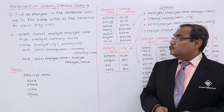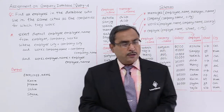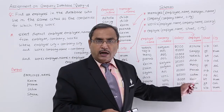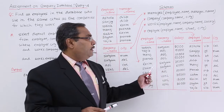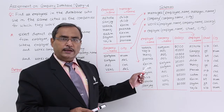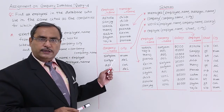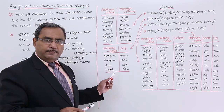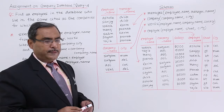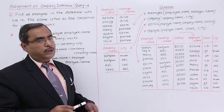First we shall have to find out what tables are required for this query execution. One table I require is the employee table, because it contains the respective city in which employees are residing. I also require the works table, which denotes which employee is working in which company. And I also need the company table, because it shows against each company name the city where the company has its offices. So I require the employee, works, and company tables.